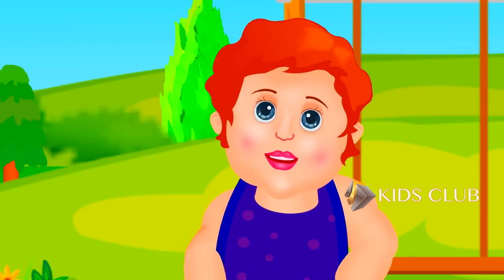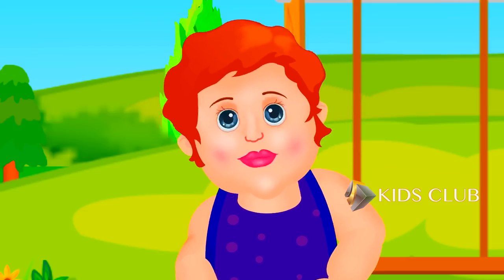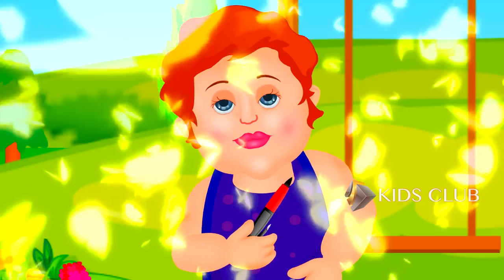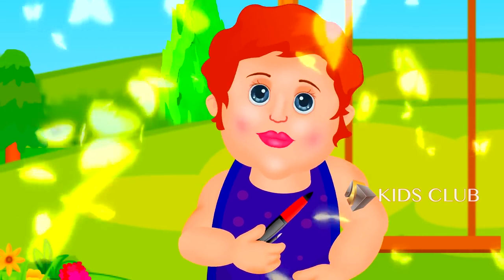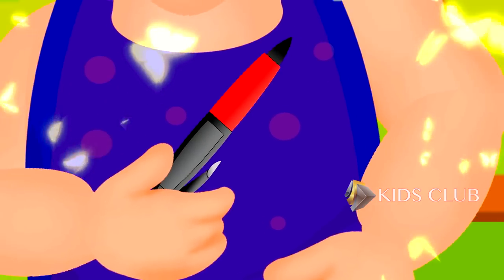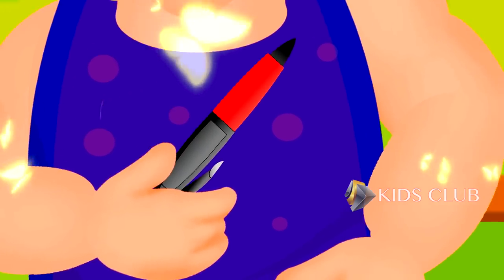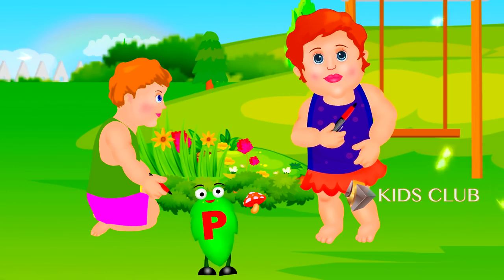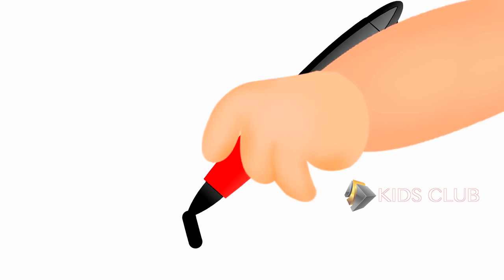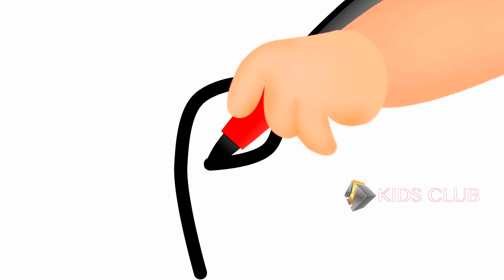The sixteenth alphabetic leaf is P. P for pen, P for pen. It's for writing, it's for writing.